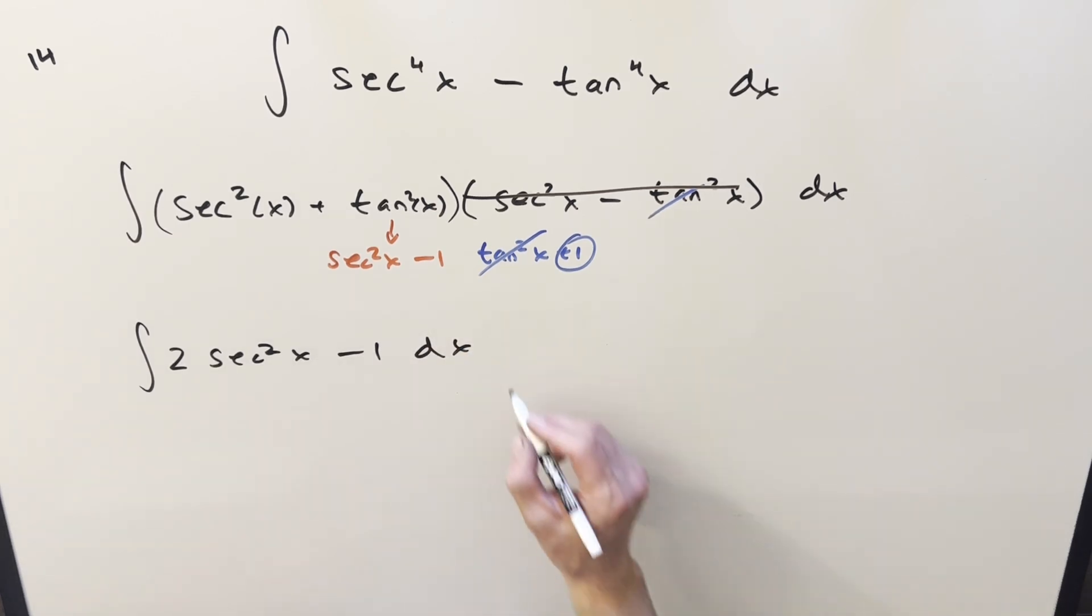But we can just go ahead and integrate this. Integral of secant squared is just going to be tangent, so this is going to be 2 tan x minus x, add a plus c, and that's it.